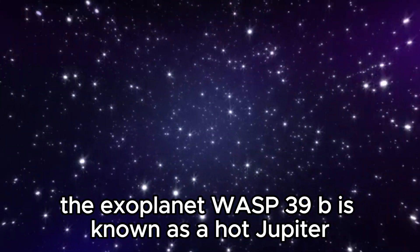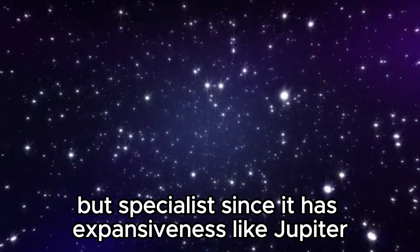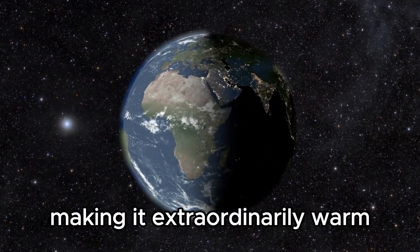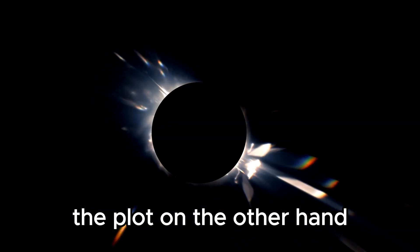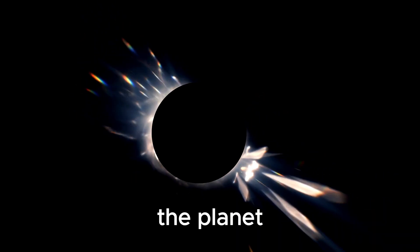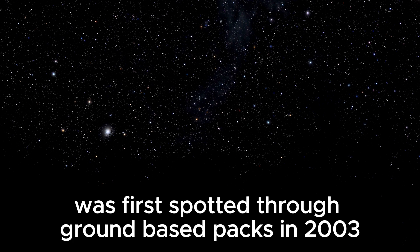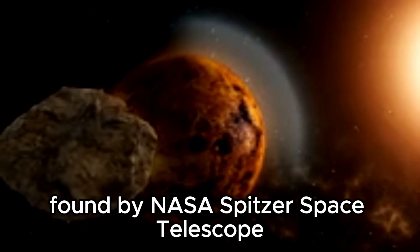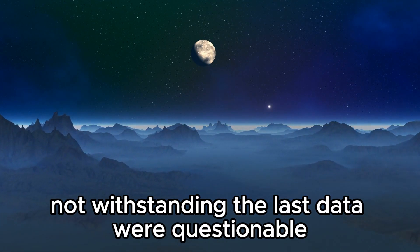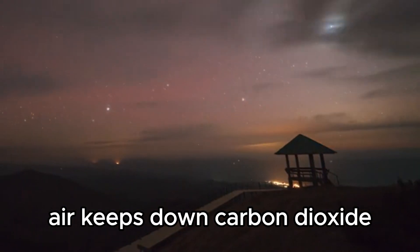The exoplanet WASP-39b is known as a hot Jupiter by specialists since it has a size like Jupiter but orbits its star considerably more closely than Mercury orbits the Sun, making it extraordinarily warm. The spectrum gives detailed information about the environment of the exoplanet. The planet, which is more than 700 light-years away from Earth, was first spotted through ground-based telescopes in 2011 and it was subsequently found by NASA Spitzer Space Telescope, which was operating from 2003 to 2020. Nonetheless, the last data were questionable. They raised the possibility that WASP-39b atmosphere contains carbon dioxide.